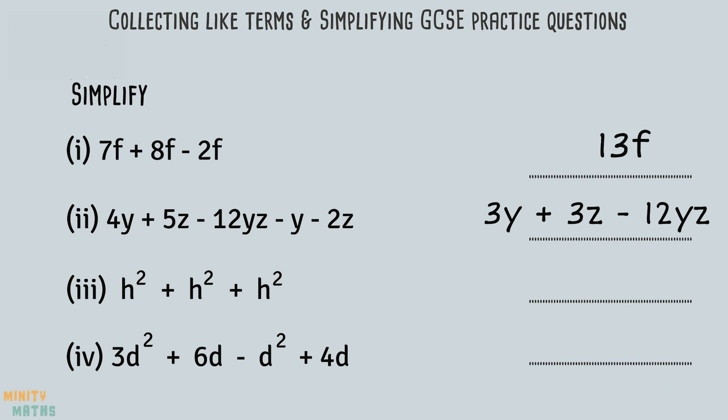For the third question, we are asked to add up three lots of h squared. The term h squared will remain the same. Therefore, we have three h squared.